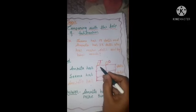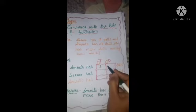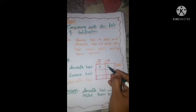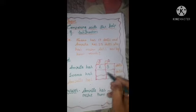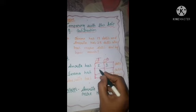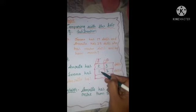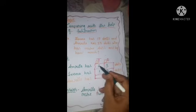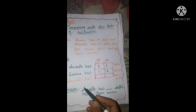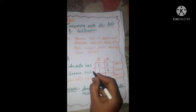Amrita has more dolls. We will write the bigger number first — Amrita has 23 dolls, so we write 23 on top, with 3 in the ones place and 2 in the tens place. Seema has 17 dolls, so we write 17 on the bottom, with 7 in the ones place and 1 in the tens place. Now we have to find out how many dolls Amrita has more, so we will subtract.